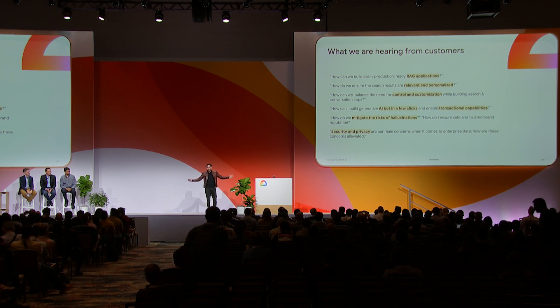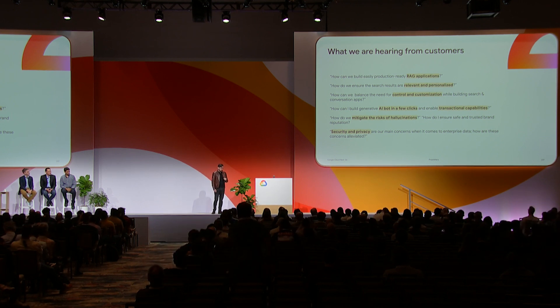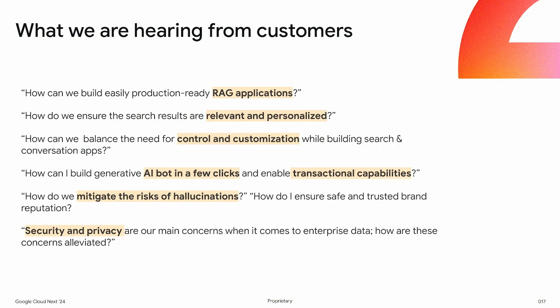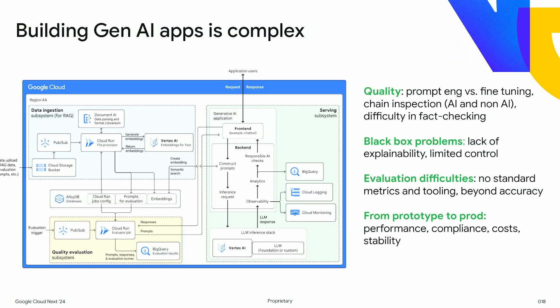So what are we hearing from customers? Because there's all this great opportunity. They're asking: how can we build easily production-ready RAG applications? These things need to be relevant and personalized, need control and customization, AI bots with transactional capabilities within a few clicks, mitigating risk of hallucinations, and ensuring security and privacy. These are all very common across pretty much all the use cases we just showed. Building generative AI applications is really complex. There is a lot of work still yet to be done around quality. Sometimes solutions look like black box problems. Evaluating is very difficult, and prototyping into production involves an entirely new pipeline — ML Ops and other pieces — enhanced with generative AI needs: running multiple agents, multiple models, multiple flows, multiple sources of data.